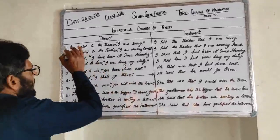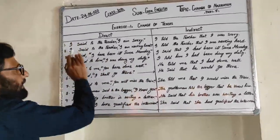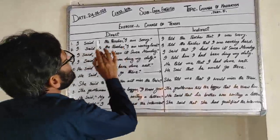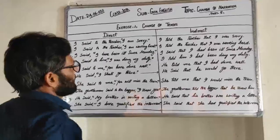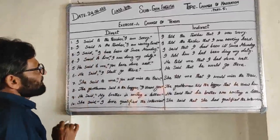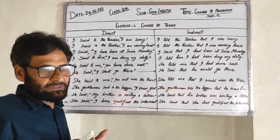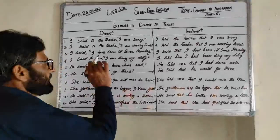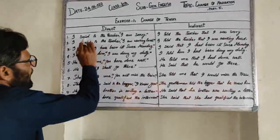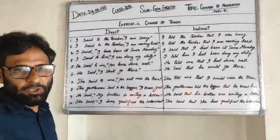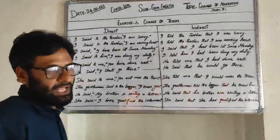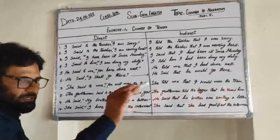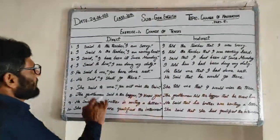پہلا sentence ہمارے پاس ہے: I said to the teacher I am sorry. ایک خاص بات کا خیال رکھیں: یہ rule بھی apply ہوتا ہے کہ جب 'said to' ہوگا تو وہ 'told' میں تبدیل ہوتا ہے indirect speech میں۔ اگر خالی 'said' ہوگا تو وہ 'said' ہی رہتا ہے indirect میں۔